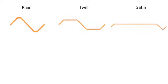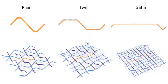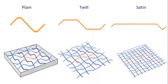We then discretize the curve into a sequence of points as shown, and create replicas of these samples based on the weave parameters. We then define a rectangular prism as the fundamental domain, as shown in the plain woven figure. Our algorithm then computes the Voronoi decomposition of the fundamental domain using curved segments as Voronoi sites.